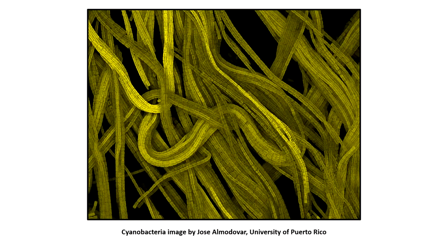So bacteria invented photosynthesis — they invented a few different kinds of it, but the one we're most familiar with is the green one. There are bacteria that still do this; they're called cyanobacteria.